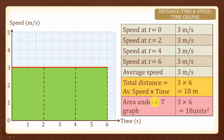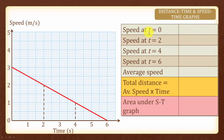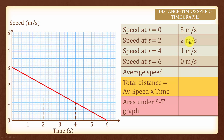Now you will notice that the area under the speed time graph is the same as the total distance. Let us look at another example here where we have a downward sloping line. Once again, the speed at t equals to 0 is 3 m per second, the speed at t equals to 2 is 2 m per second, the speed at t equals to 4 is 1 m per second, and the speed at t equals to 6 is 0 m per second. Let us add up these 4 speeds and divide by 4 to get the average speed and we will have 1.5 m per second.